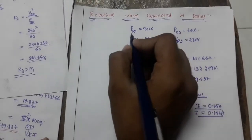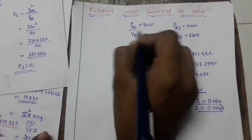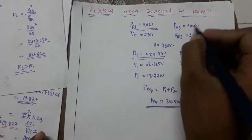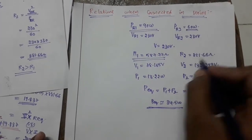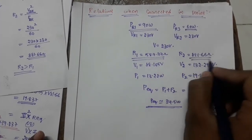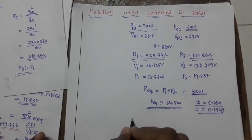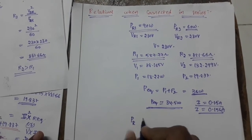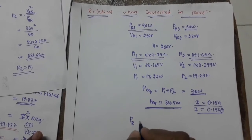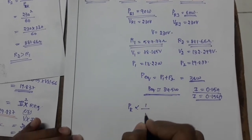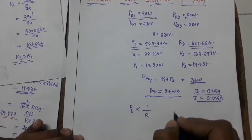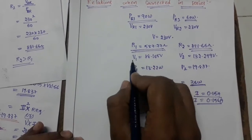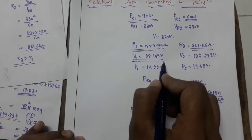Here you can see that the bulb with higher power rating has less resistance, and the bulb with lower power rating has high resistance. So the power rating of the bulb is inversely proportional to resistance. And the resistance is proportional to the voltage drop across the bulbs.